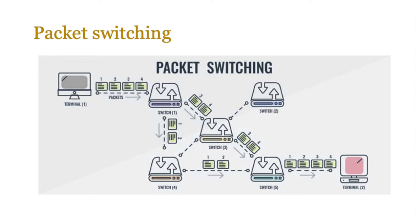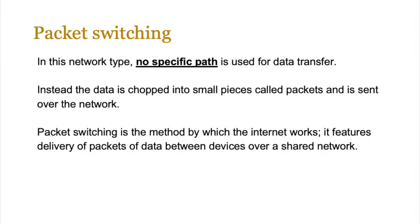Each packet follows its own path and the shortest available path is selected. Packets can reach the destination in a different order to that in which they were sent — for example, sent as 1, 2, 3, 4 but arriving as 3, 4, 2, 1. The data is chopped into small pieces called packets and sent over the network, and packet switching is the method by which the internet actually works, featuring delivery of packets of data between devices such as routers over a shared network.